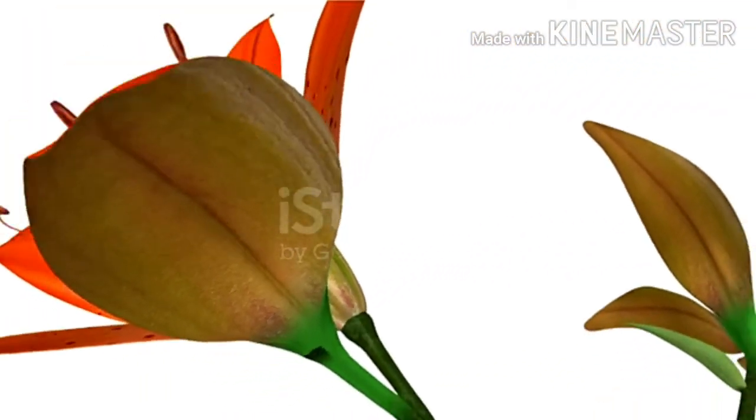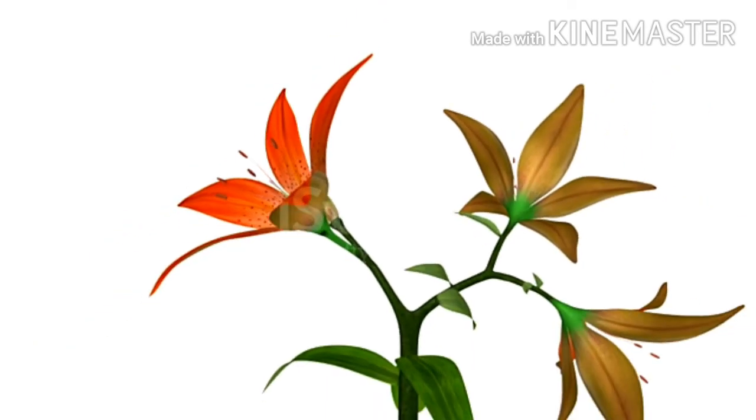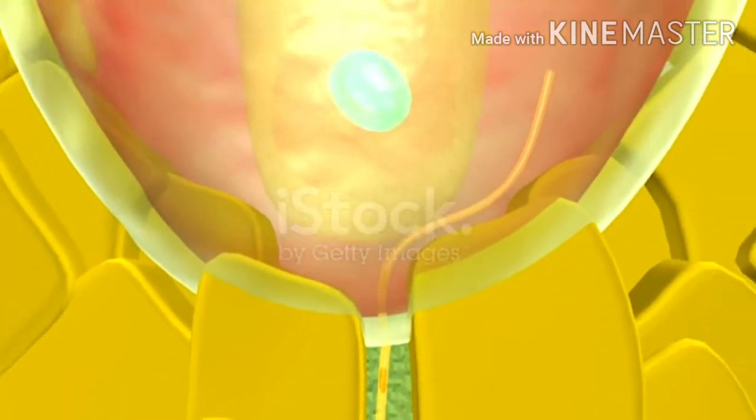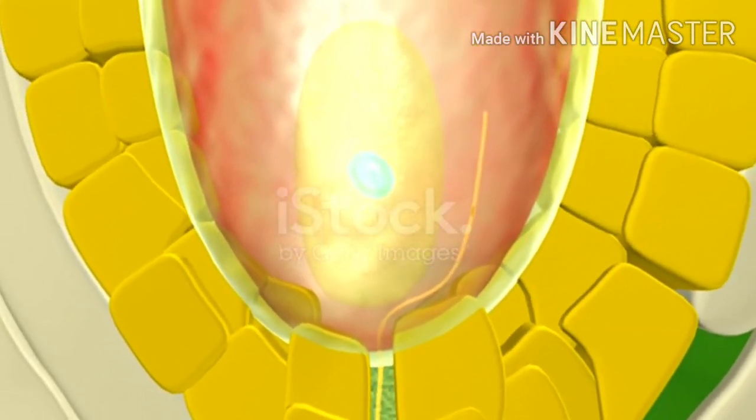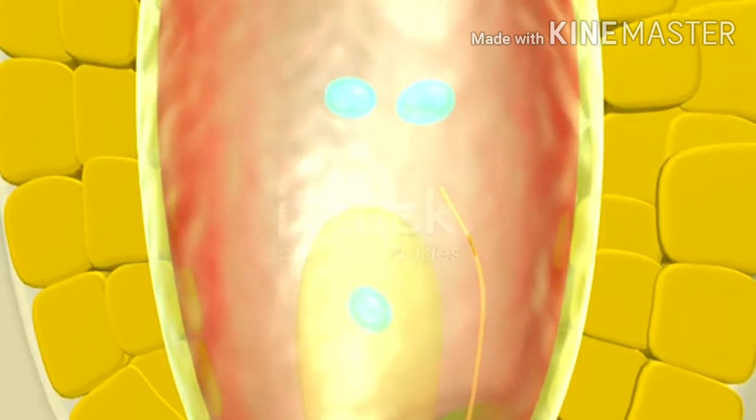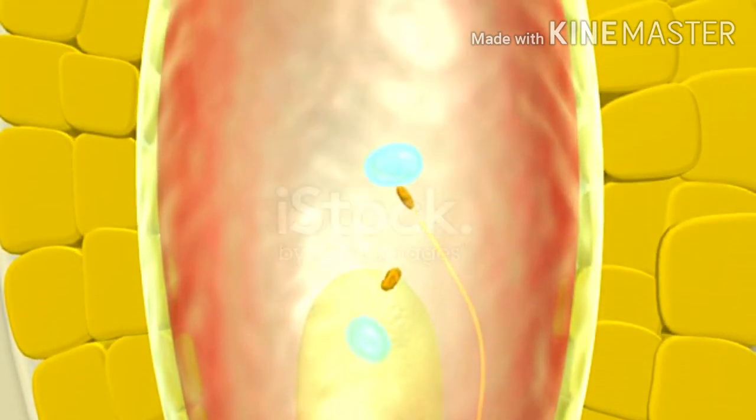Or between the egg and the synergid, the first male gamete fuses with the egg to form a diploid zygote. This process is known as fertilization. The second male gamete fuses with two polar nuclei to form a triploid endosperm nucleus which will change into endosperm cell.